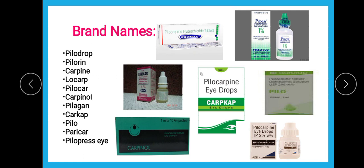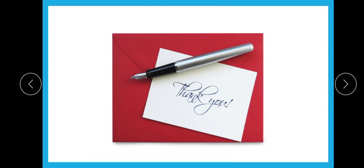The brand names include: Pylomax, Pylocar, Pericar, Carbcap, Pylocarpinol, Pylodrop, Pylorine, Carbine, Low Carb, Carpinol, Pylogan, Carcap, Pylo, Pericar, and Pylopress — all are eye drops. With this we finish pilocarpine nitrate. The key points to remember: it is primarily used in ophthalmology, it is a direct acting cholinomimetic drug, and it is a cholinomimetic alkaloid — specifically an imidazole alkaloid. Thank you.